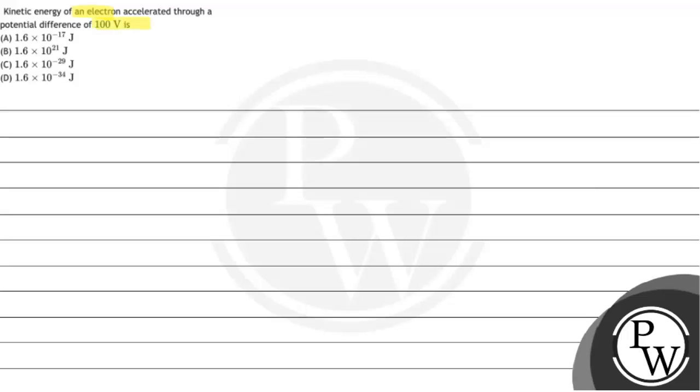The kinetic energy of an electron will accelerate from 100 volt potential difference. So the concept is the relation between the kinetic energy and the potential difference is given as kinetic energy is Q into delta V.